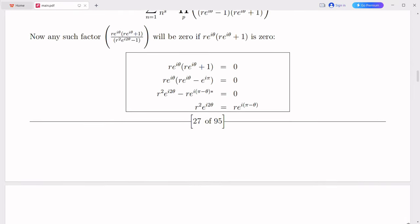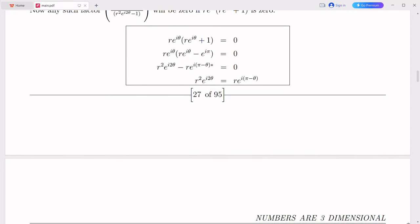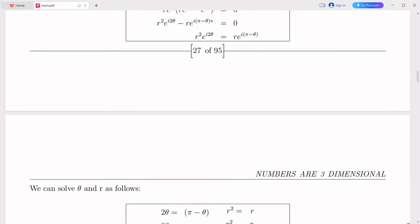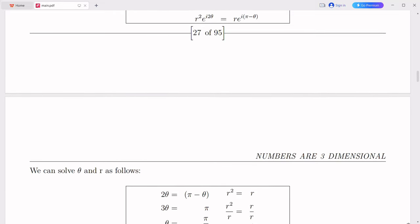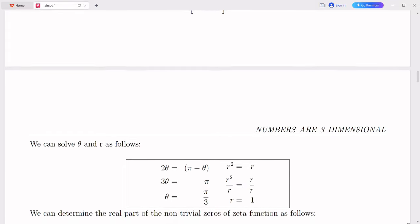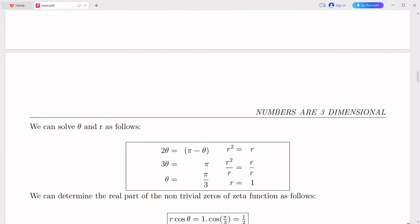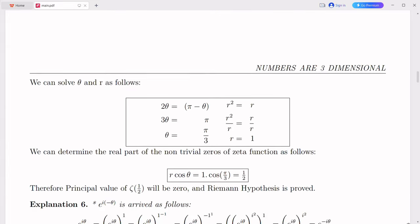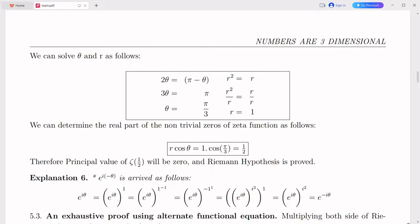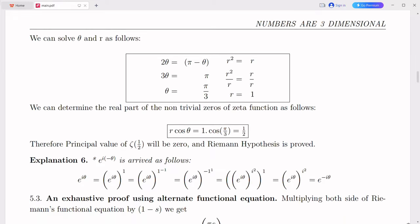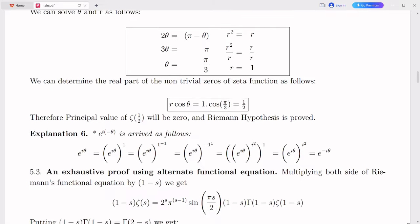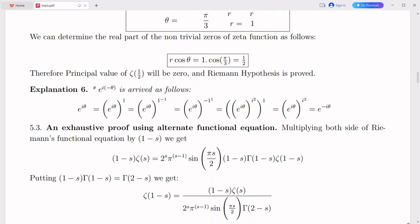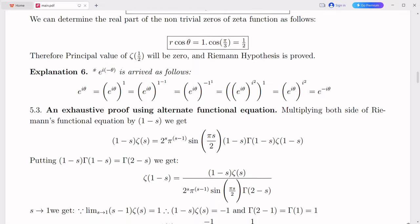The integration of imaginary numbers with the real number line would have practical implications for numerous technological applications. Complex numbers are crucial in electrical engineering, signal processing, control systems, and telecommunications. By extending the real number line, it would provide a more comprehensive mathematical framework for analyzing AC circuits. Complex numbers would continue to play a crucial role in representing voltage and current phasors accurately. It would enable engineers to perform complex calculations involving impedance, reactance, and power factor more efficiently.